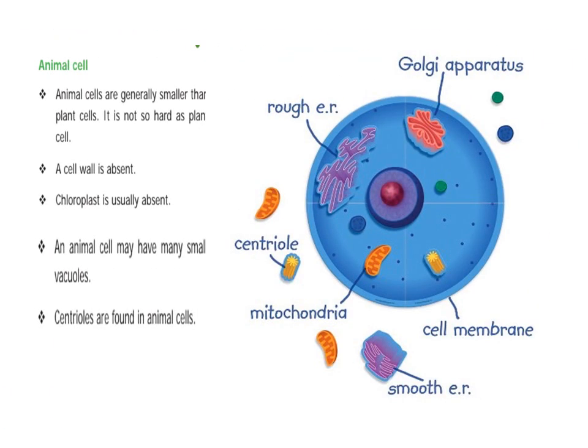Animal cells are generally smaller than plants. In animal cells, the cell wall is absent.